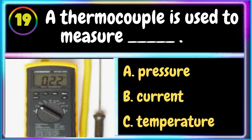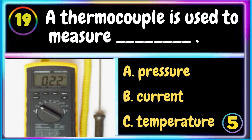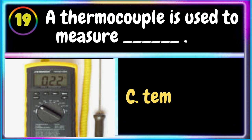19. A thermocouple is used to measure: A. Pressure B. Current C. Temperature. The correct answer is C. Temperature.